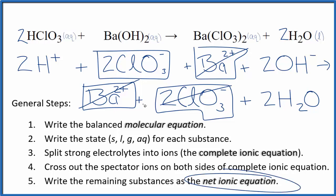What's left, that's the net ionic equation for HClO3 plus Ba(OH)2. I'll clean this up, write the states. We'll have our net ionic equation.